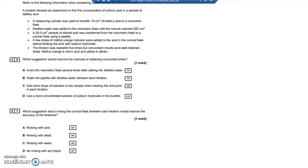Question 20. A student devised an experiment to find the concentration of sulfuric acid in a sample of battery acid. A measuring cylinder was used to add 10cm³ of the battery acid to a volumetric flask. Distilled water was added up to the 250cm³ mark.